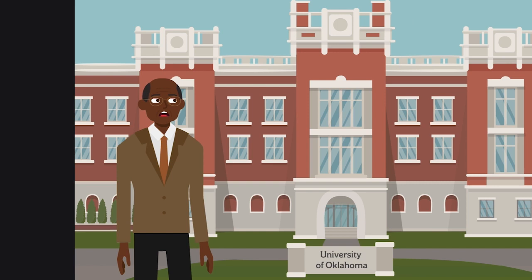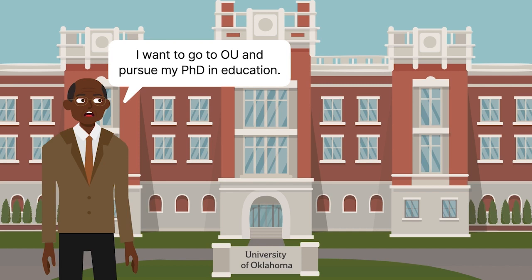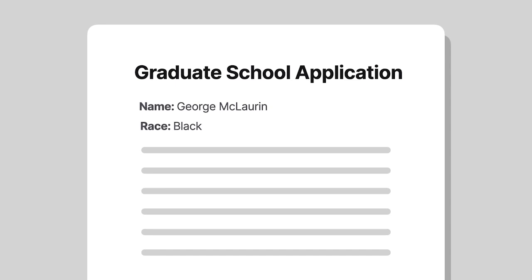George McLaurin had to fight for the right to attend the University of Oklahoma. McLaurin, who was Black, wanted to pursue a Ph.D. in education. He applied to graduate school at the all-white University of Oklahoma, but was denied admission based solely on his race.